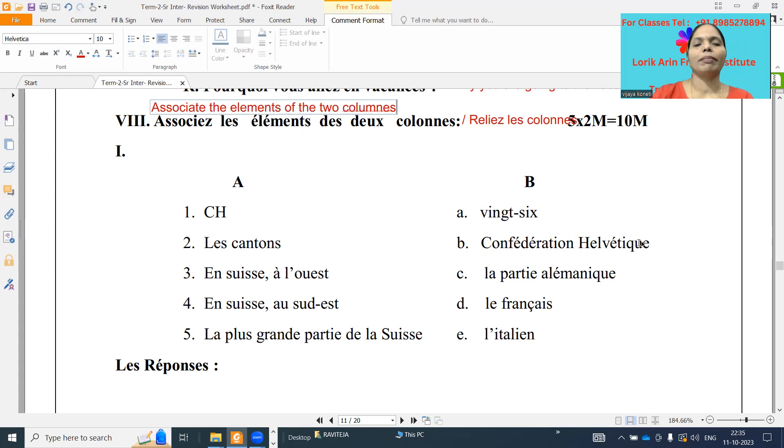So A, B, C. CH full form is Confédération Helvétique. It is based on the first lesson, préparatif de voyage. Next one, les cantons. How many cantons are there in Switzerland? Vingt-six. Okay, 26 cantons. A it is.